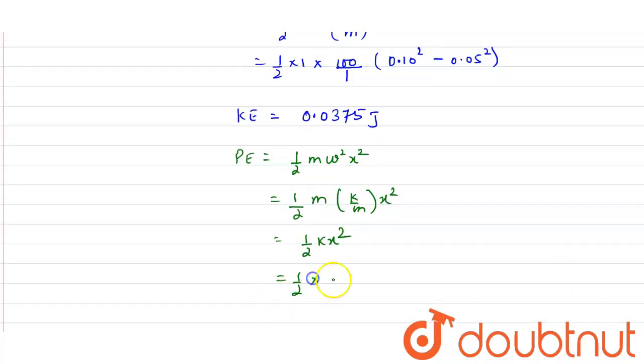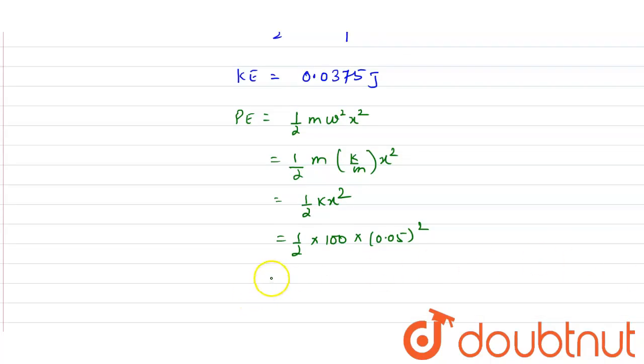Now half k is 100 N per meter into x is the displacement, that is 0.05 meter, whole square. So on solving this, we will get the potential energy and it will be 0.125 joules.